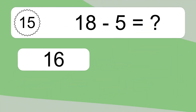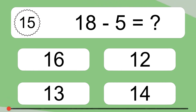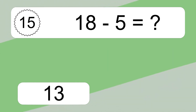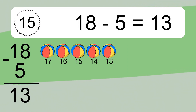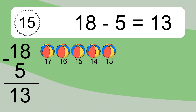18 minus 5 equals what? 18 minus 5 equals 13. Let's count it: 17, 16, 15, 14, 13.